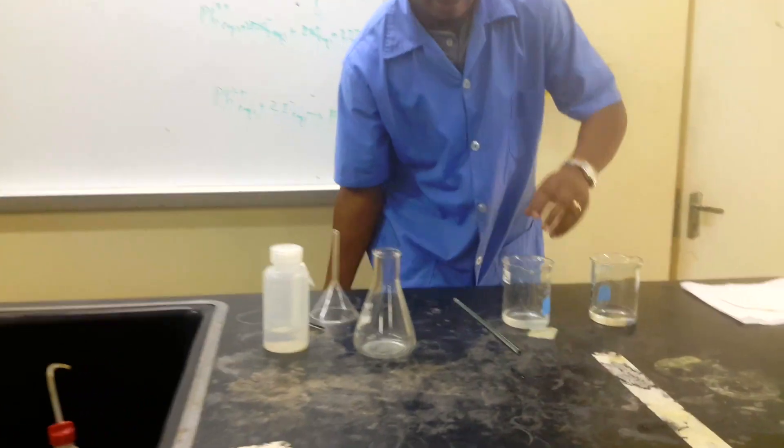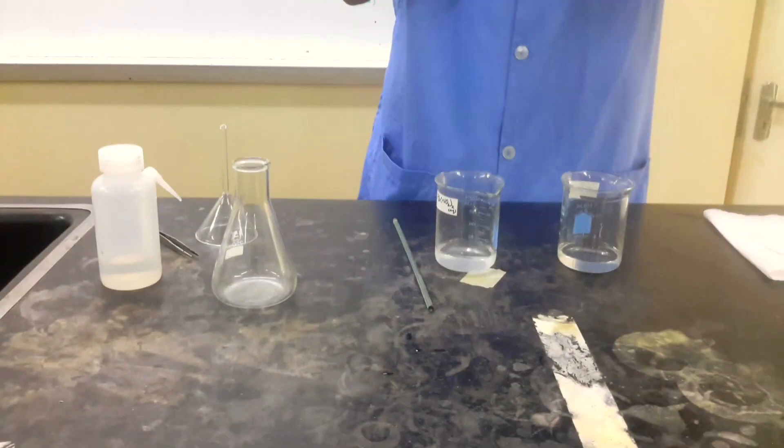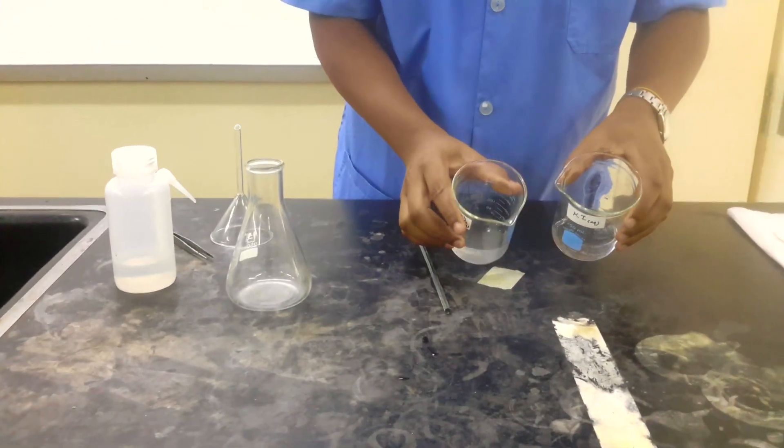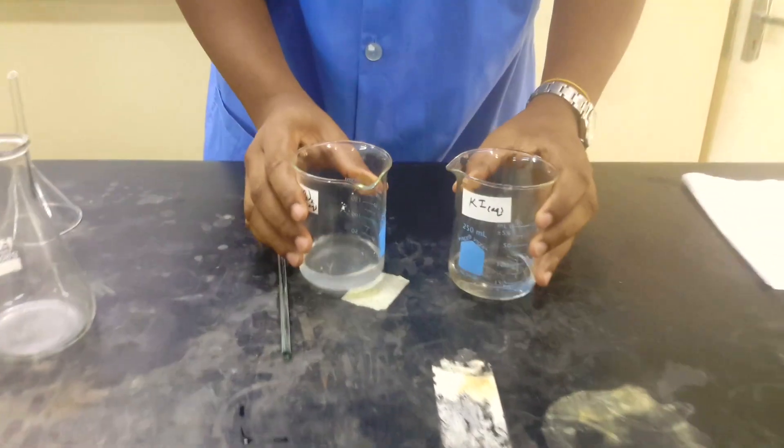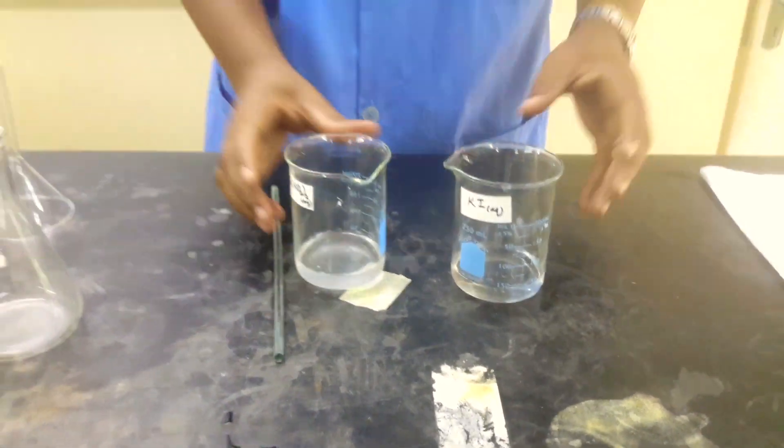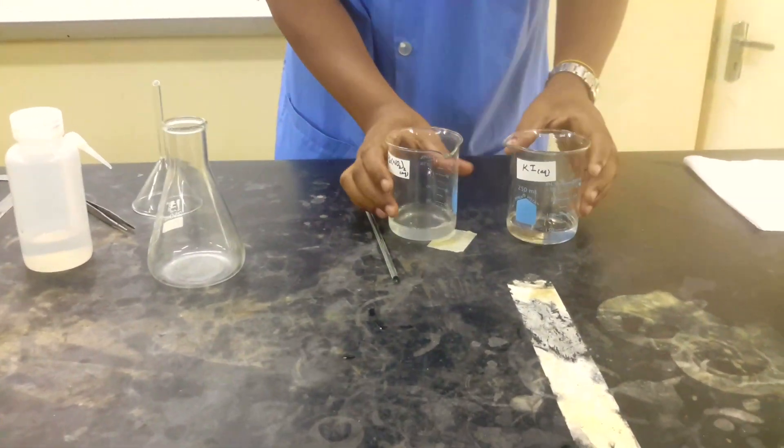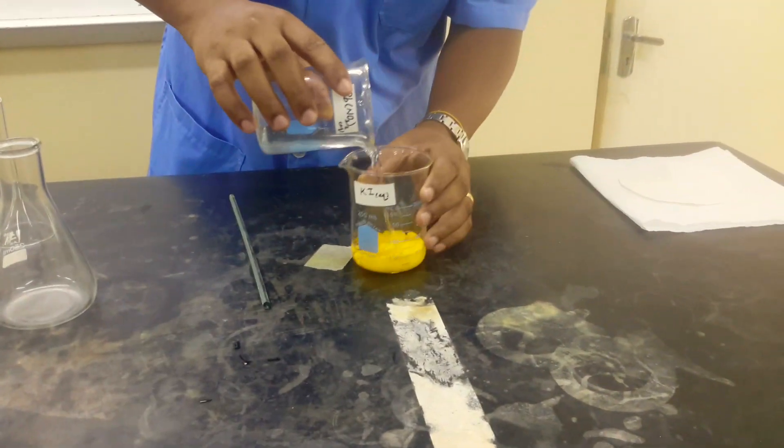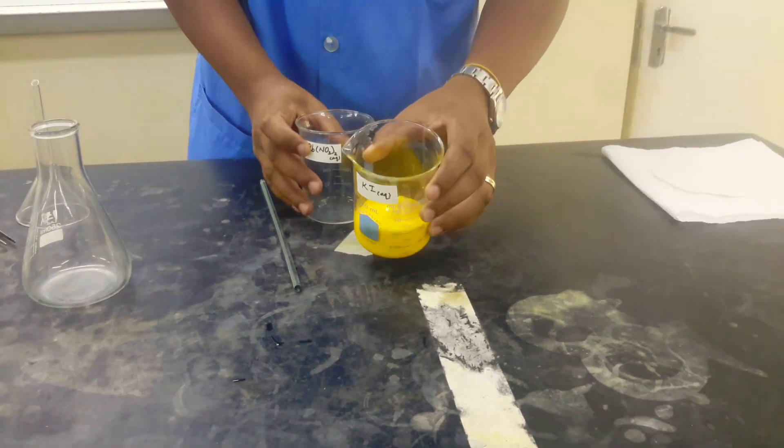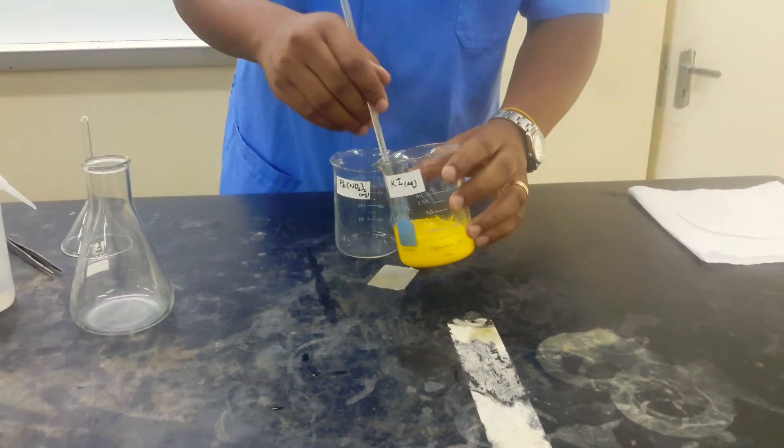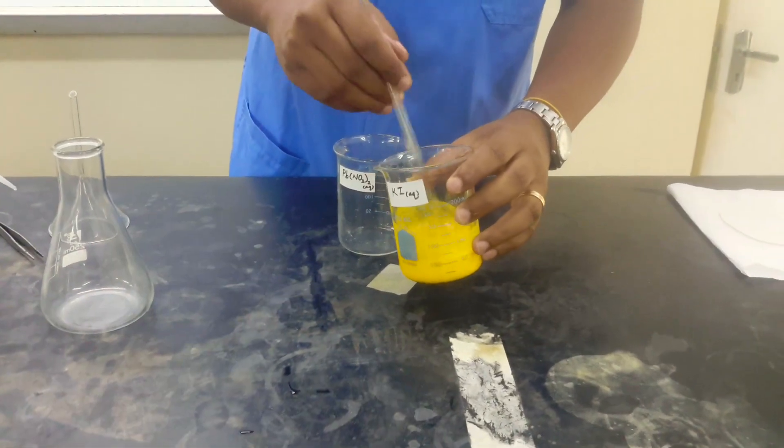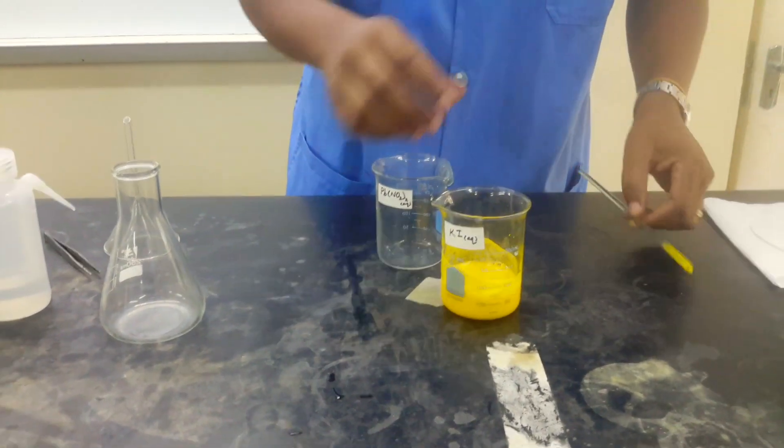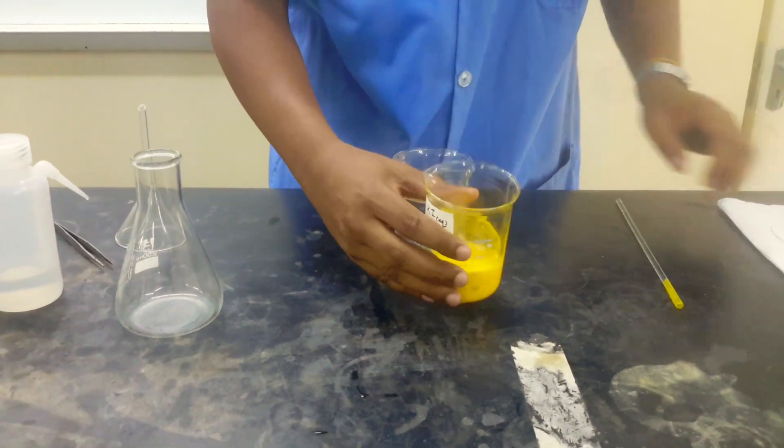So we have our lead nitrate and we have our potassium iodide solution. Both of them are colorless liquids. So all we're doing is just pouring one into the other. We're just going to add the potassium iodide to the lead nitrate. Voila, this is what we end up with.